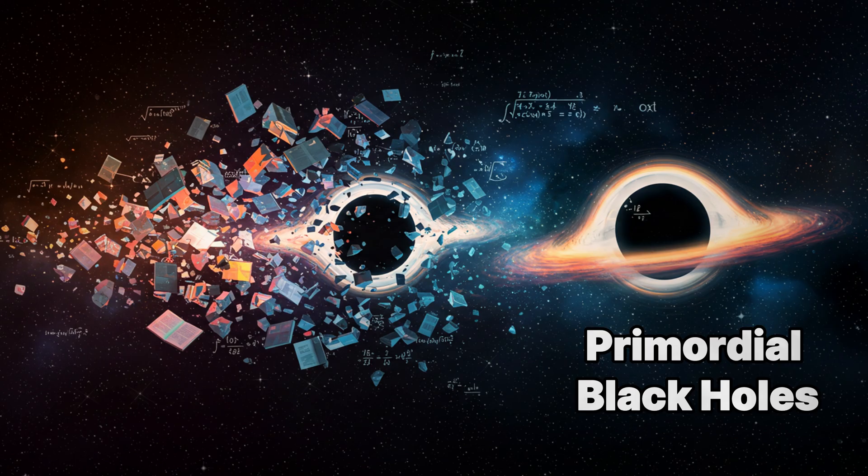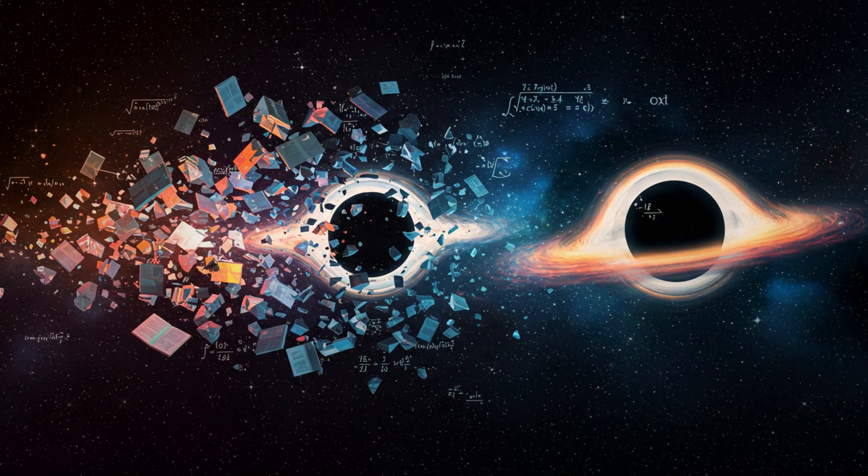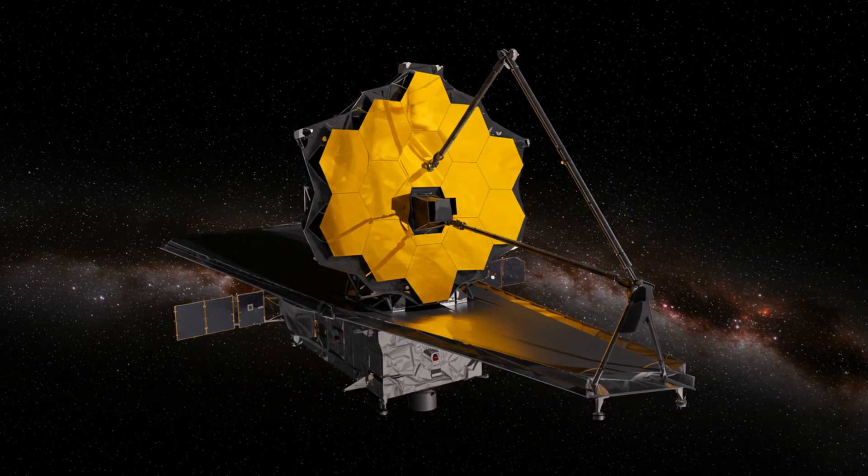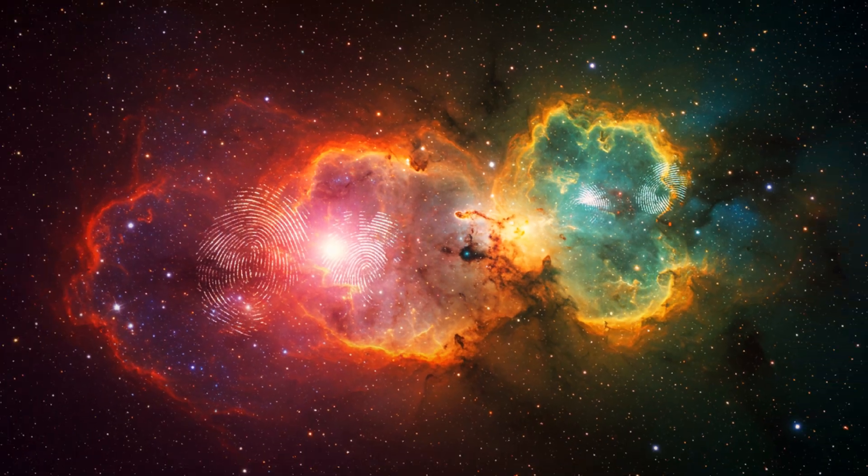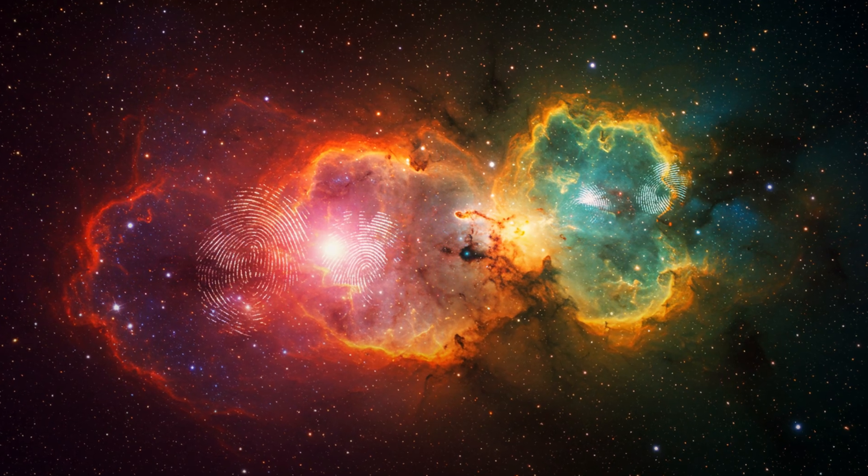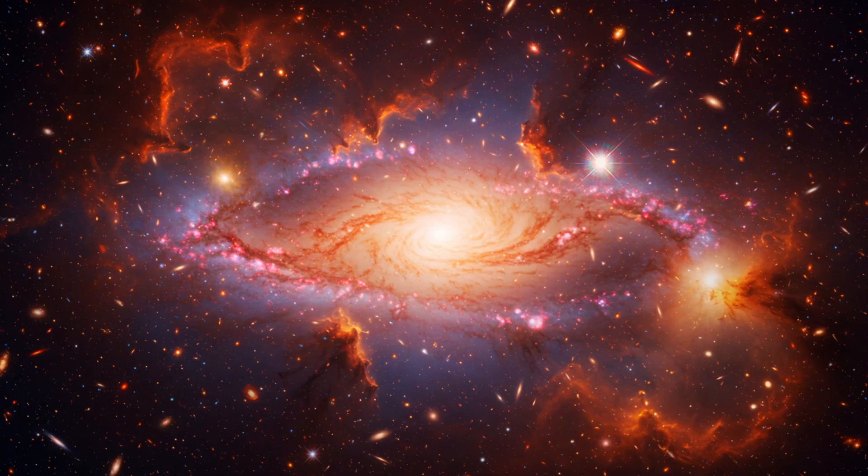For decades, primordial black holes have lived only in theory, a cosmic mystery, unproven, unreachable. But now, NASA's James Webb Space Telescope may have just seen their fingerprints, hidden in the faint glow of the early universe. If true, this discovery could rewrite everything we know about how the cosmos began.